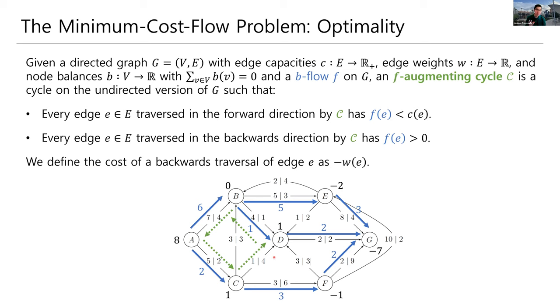The reason we care about f-augmenting cycles is just like how with f-augmenting paths, we tried to push some additional flow through to make our value better. Here, we're going to cycle flow on our f-augmenting cycle in a way that makes our cost lower without changing the fact that node balances and flow amounts are kept more or less the same.